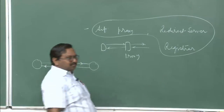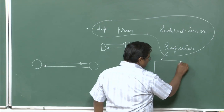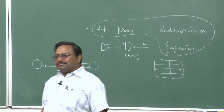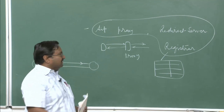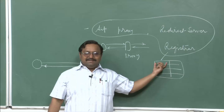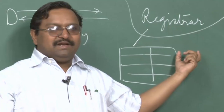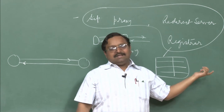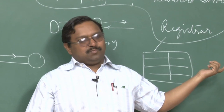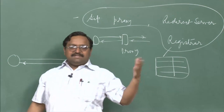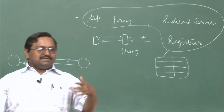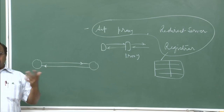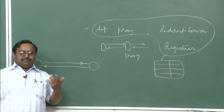What the registrar contains is access to a database. Whenever you attach your phone or change your IP address, you re-register with it. The registrar maintains your SIP URI and the corresponding attachment point—which is technically the IP address, MAC address, and port number.